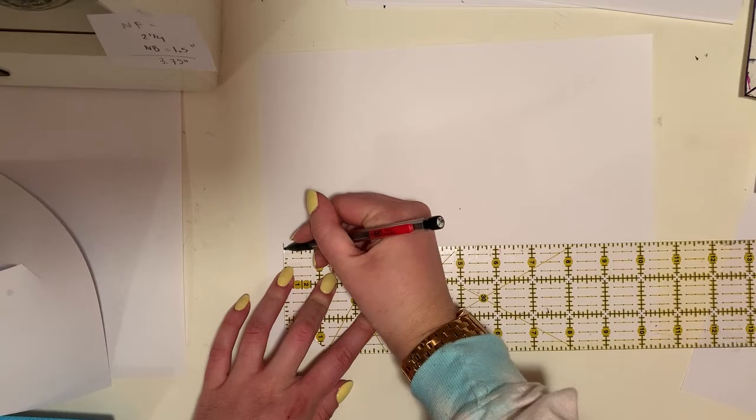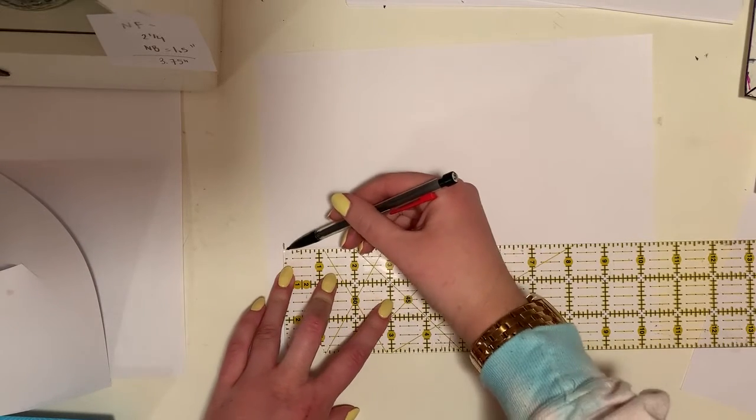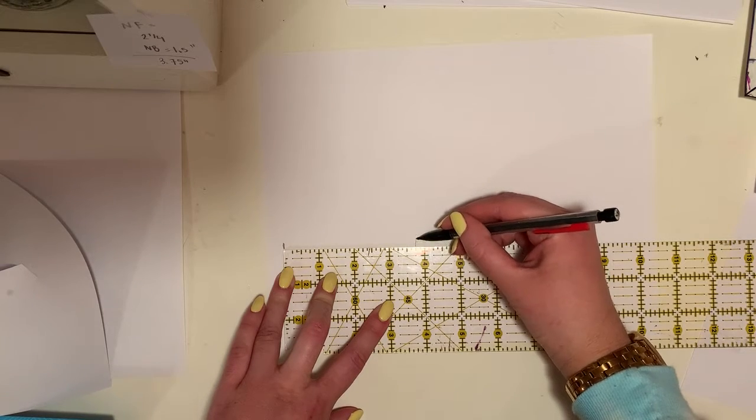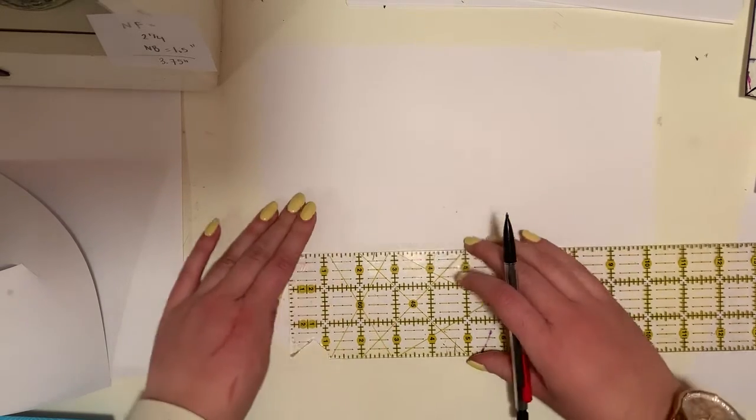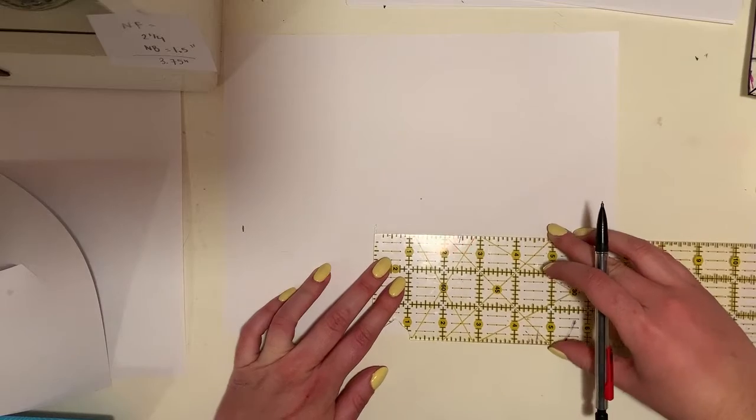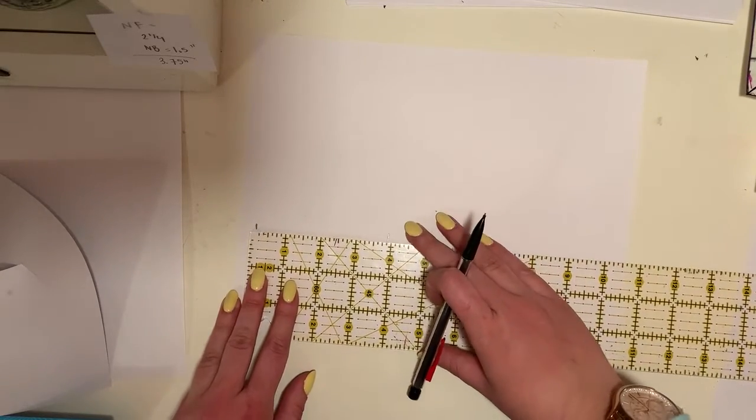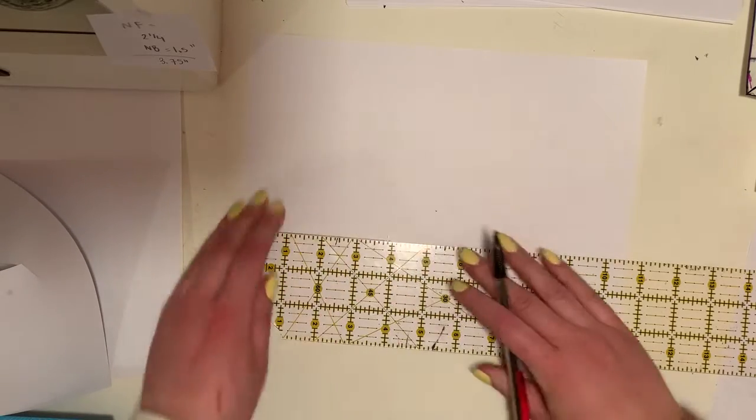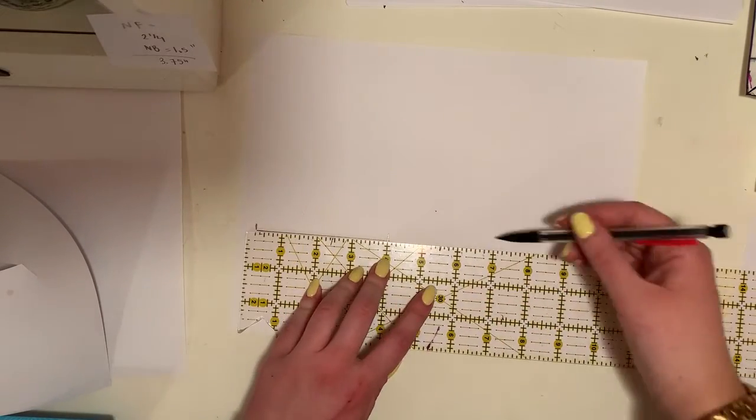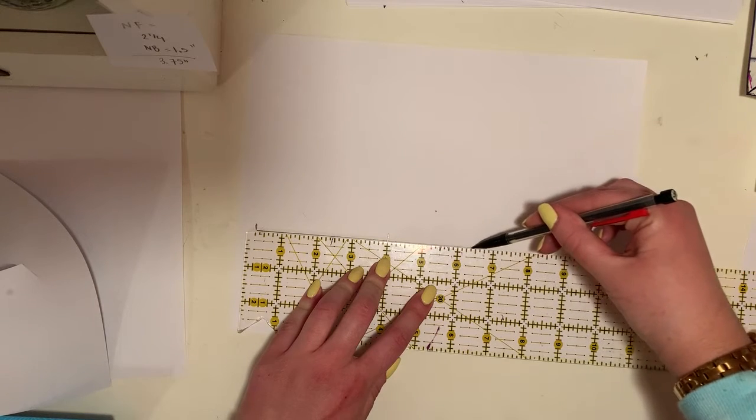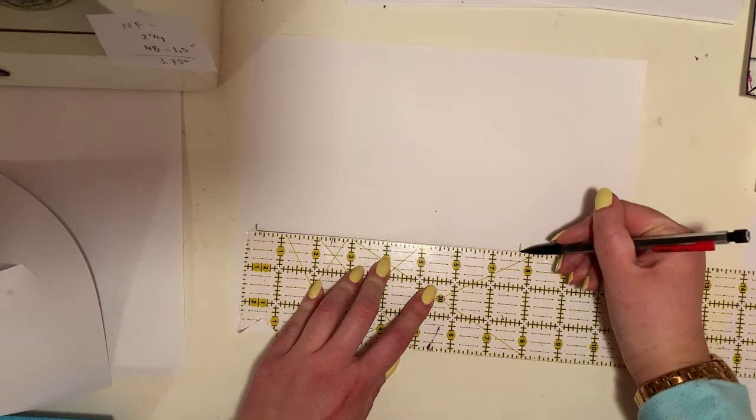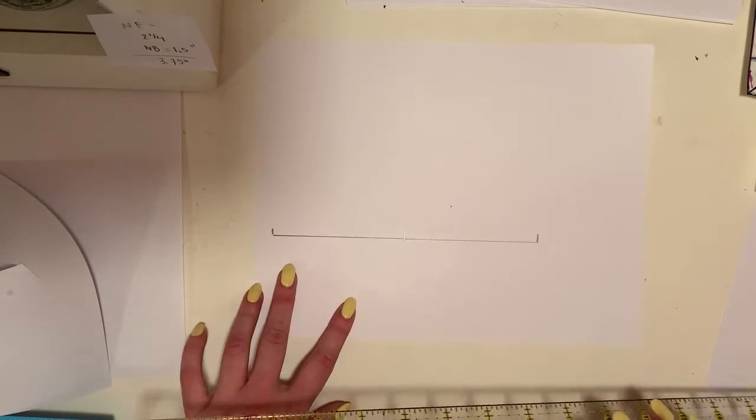I'm going to start over here again. We're going to do 3 and 3 quarters of an inch, and then again 3... let's connect that. Perfect. And again, 1, 2, 3 and 3 quarters. Bias full roll is really just a fancy name for a turtleneck collar.